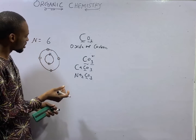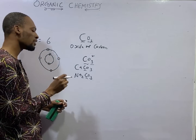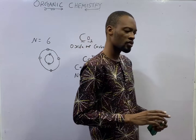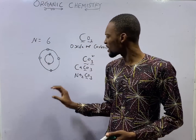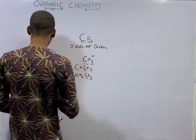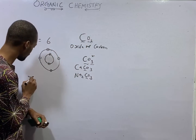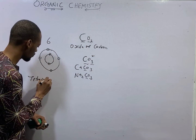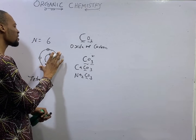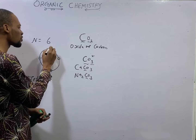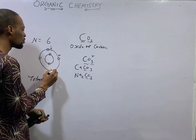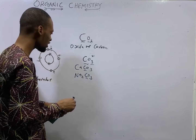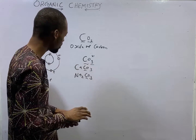Carbon has four electrons in its outer shell. So from here we can say that carbon is tetravalent — it can accept four electrons, one, two, three, four, to complete its outer shell.